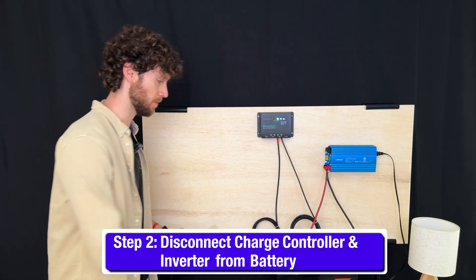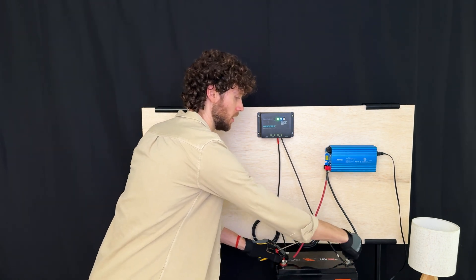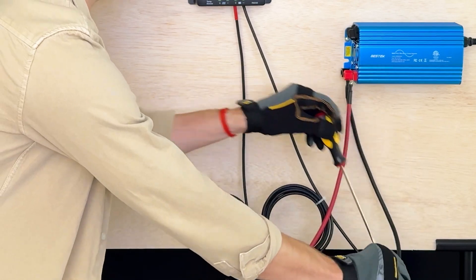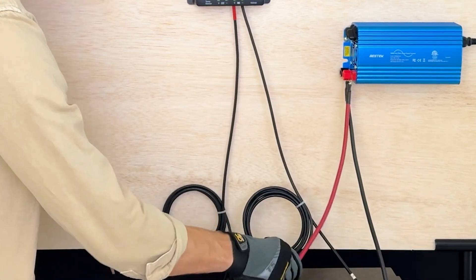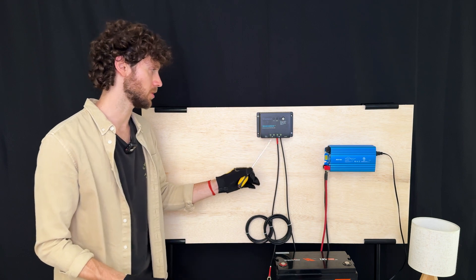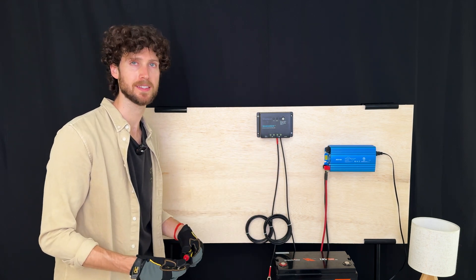The next step is to disconnect everything from your battery. So I'm going to remove these caps and use my screwdriver to unscrew the bolts. And obviously once that's done, the charge controller and the inverter will lose power and we can start working on this system.